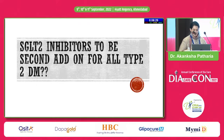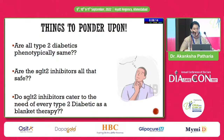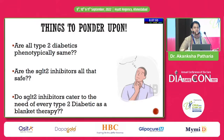I'm against SGLT2 inhibitors as a blanket therapy, and there are things we need to ponder: Are all type 2 diabetic patients phenotypically the same? Are SGLT2 inhibitors all that safe? Do SGLT2 inhibitors cater to the need of every type 2 diabetic as a blanket therapy? It's like SGLT2 being proposed as a universal solution — but even that character gets demolished in Gangs of Wasseypur. SGLT2 cannot be that in all cases.